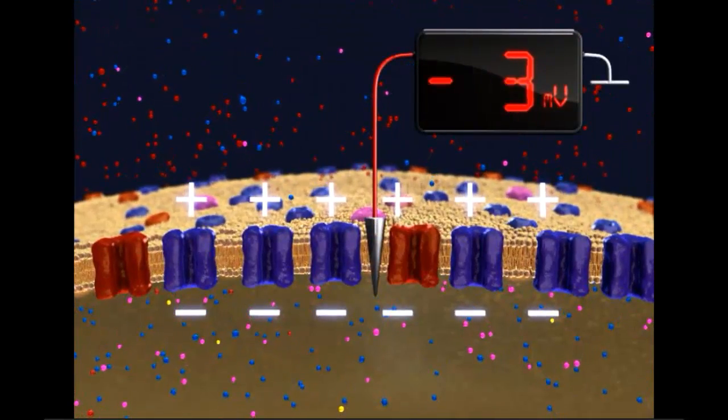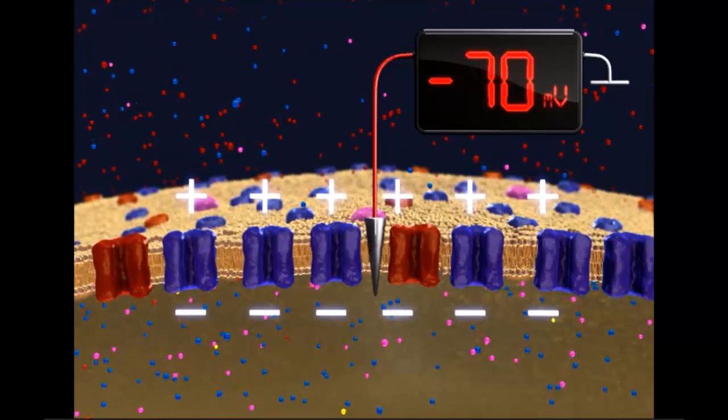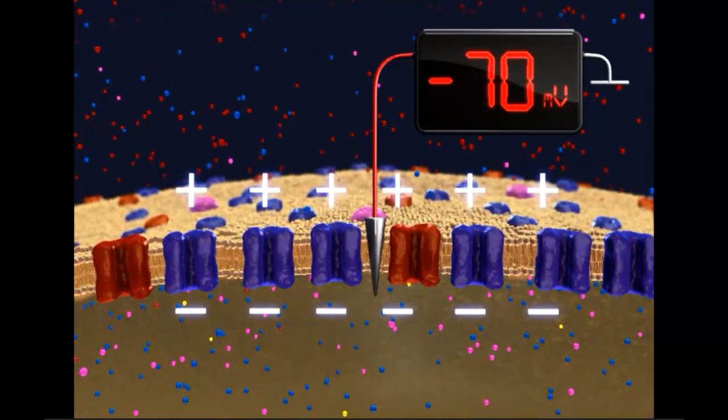On average, an intracellular electrode records a value of minus 70 millivolts.